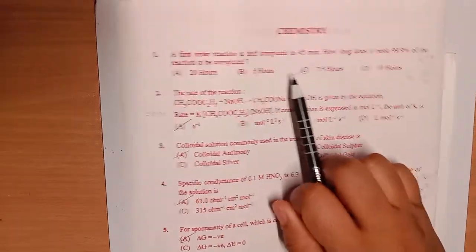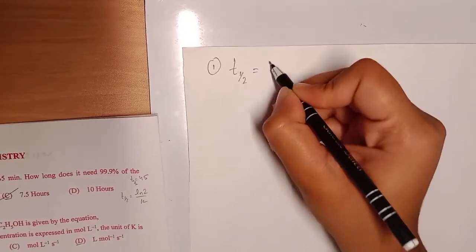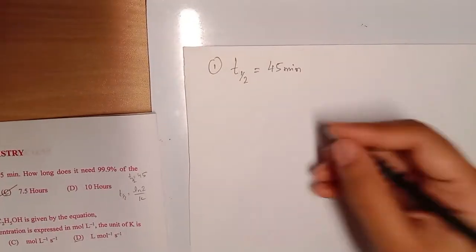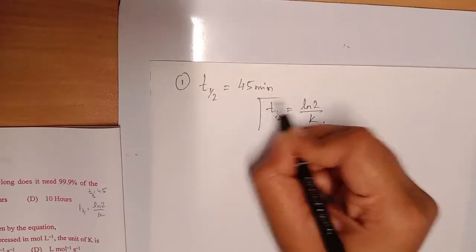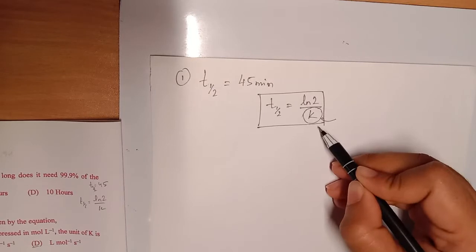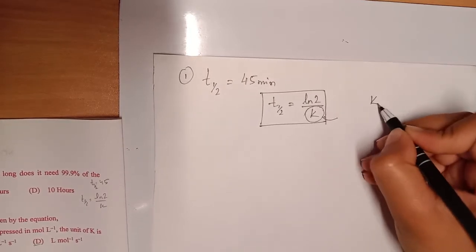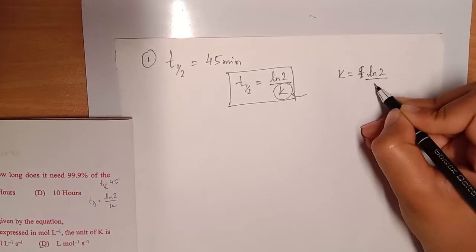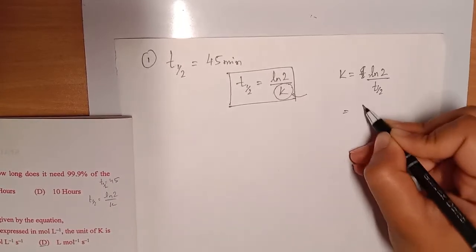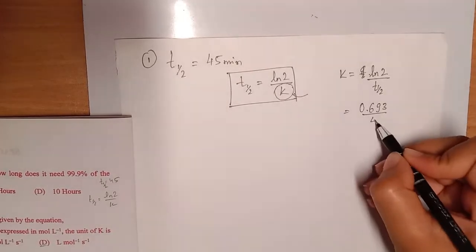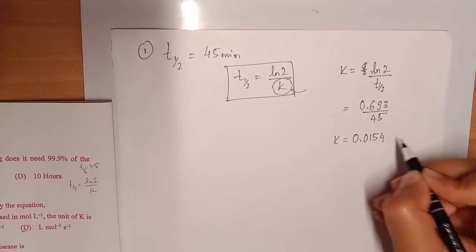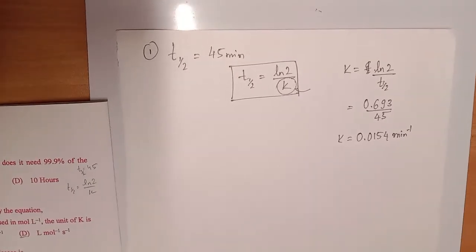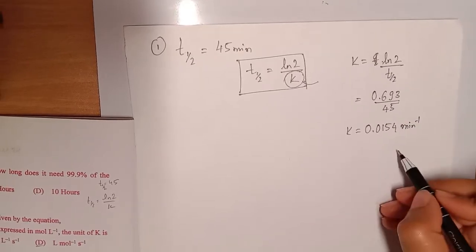It is given that it is a first order reaction and it is half completed, so T_half is 45 minutes. We know the formula for T_half is ln2 divided by K. We'll use this formula to find K, the rate constant. So K equals ln2 divided by T_half, which is 0.693 divided by 45 minutes, giving K equals 0.0154 minute inverse.